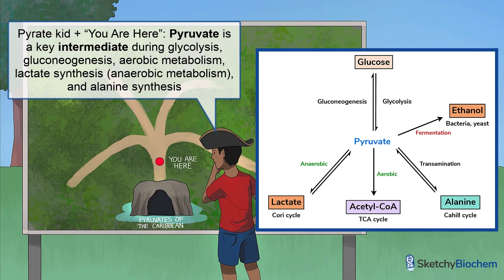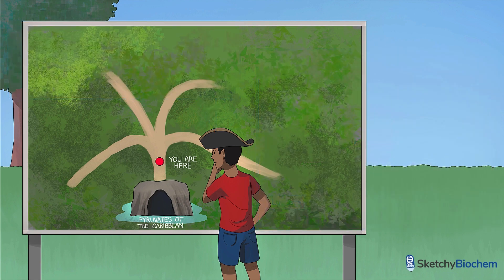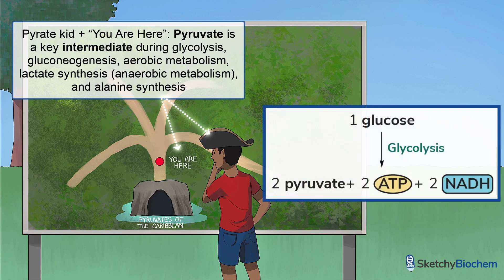Pyruvate is a key intermediate during glycolysis, gluconeogenesis, and aerobic metabolism. It's also needed to synthesize lactate and alanine. In bacteria and yeast, pyruvate produces ethanol by fermentation. But how did he even get here in the first place? As you may remember, during glycolysis, one glucose produces 2 pyruvate, 2 NADH, and 2 ATP.